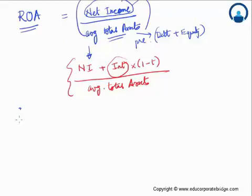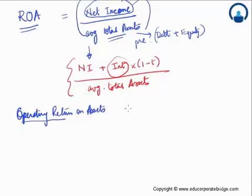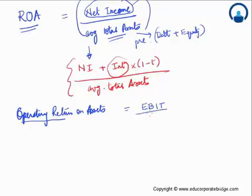Let's look at another set of profitability ratios: operating return on assets. As the word suggests, operating returns are operating income, which we call earnings before interest and taxes — EBIT or operating income. Since it is a return on assets, we take average total assets in the denominator. This defines what is the operating return on total assets.